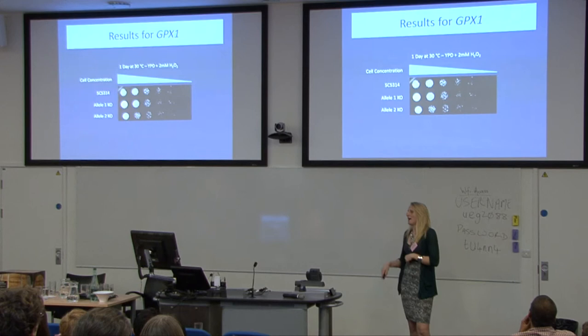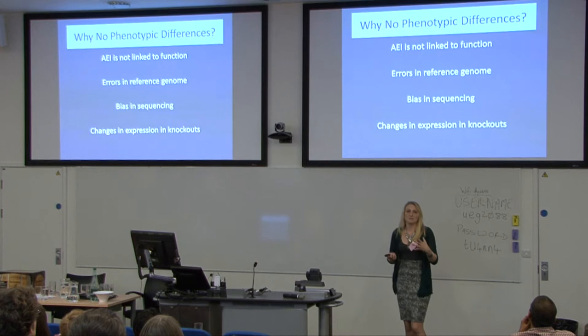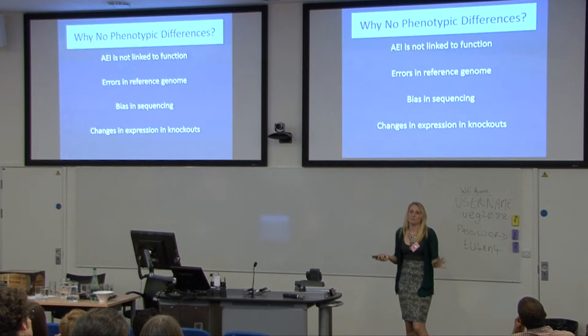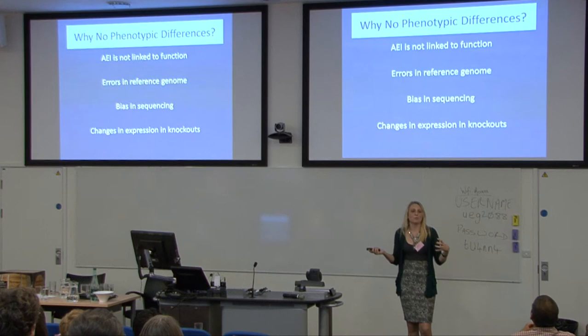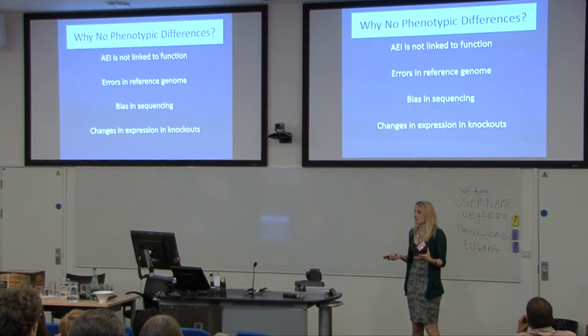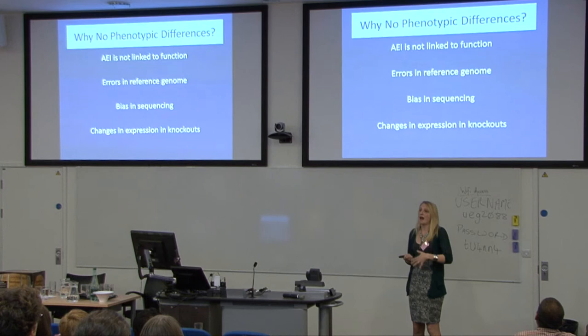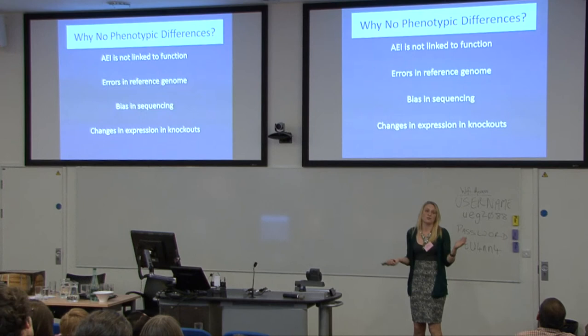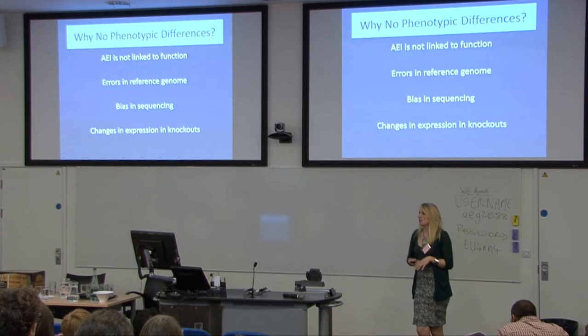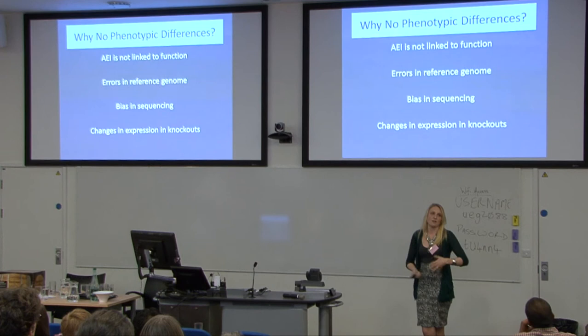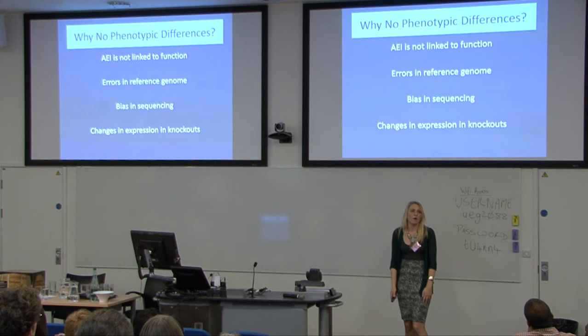So why aren't there any functional differences? I might have just been unlucky and not found the right phenotypic screen. There may actually be no link between AEI and function. But there are also potential errors in my alignment — there are errors in the reference genome I use, which is now 10 years old and contains sequencing errors. When I align reads back to SNPs that are not real, I'm recording incorrect read counts for each allele. There are also biases in sequencing technology itself — GC content affects sequenceability, and if this differs between alleles it can skew my AEI. Additionally, in my knockouts, the remaining allele may be increasing its expression to compensate, which is something I need to investigate.